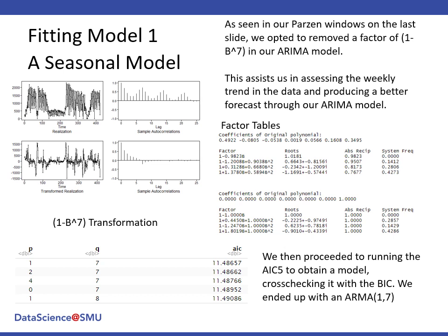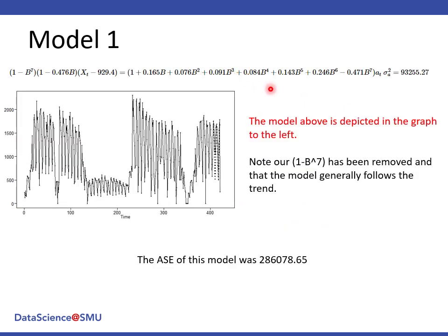And then after that, we ran the AIC 5 and ended up with a 1 7. The model above here is depicted in the graph over here to the left and you can note that the 1 minus B to the 7th has been removed. And the model generally follows the trend. And then we ended up with an ASE of a fairly high. It didn't perform quite as well as the other ones.